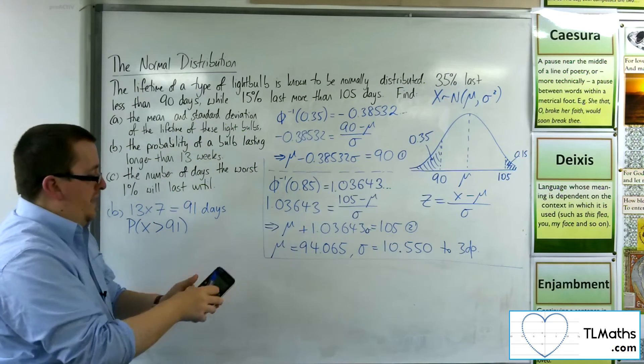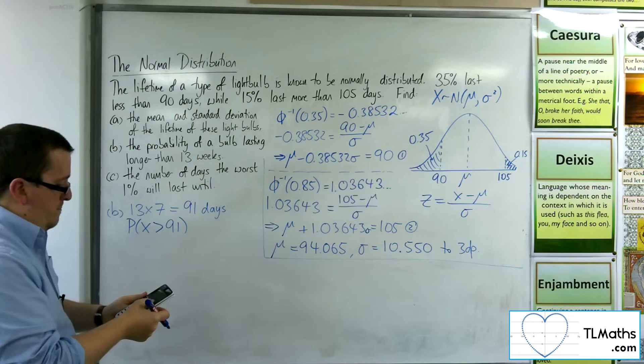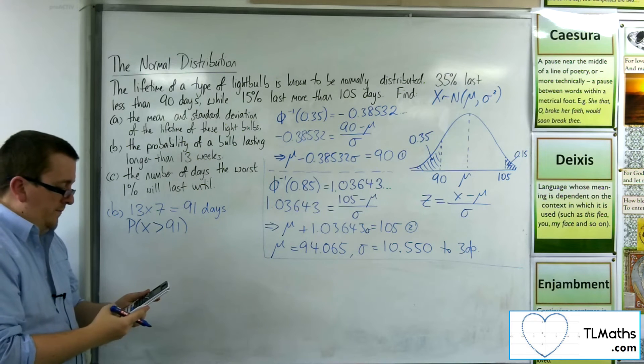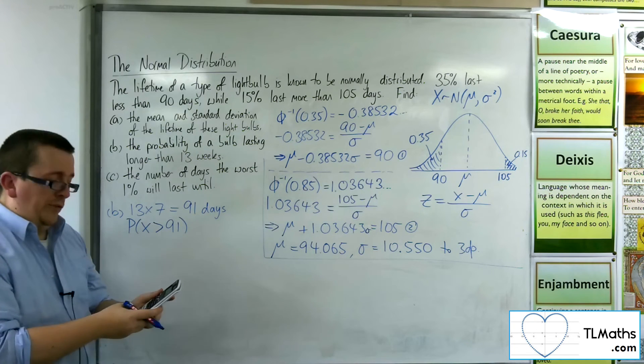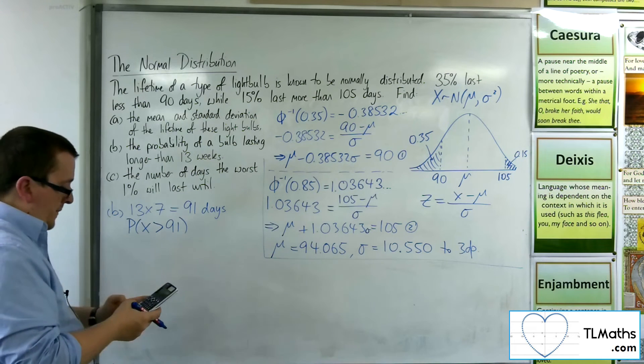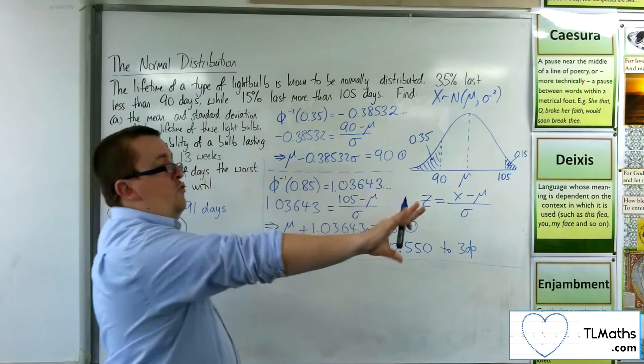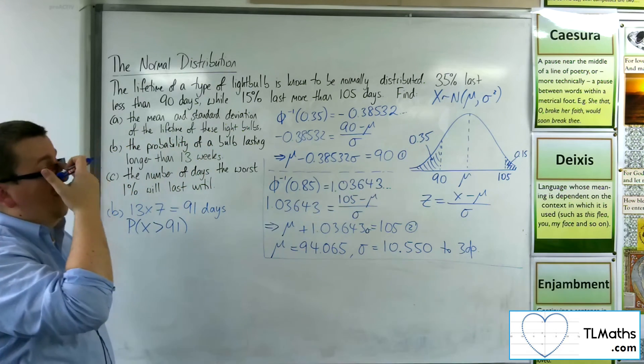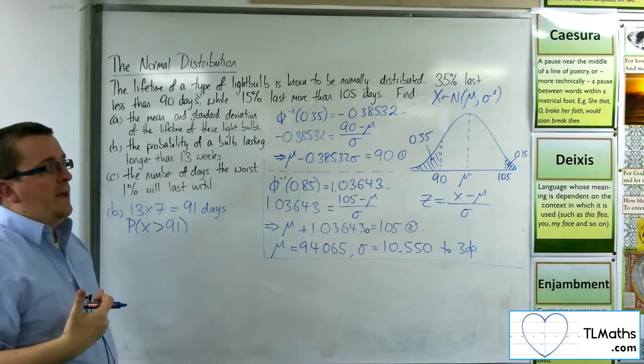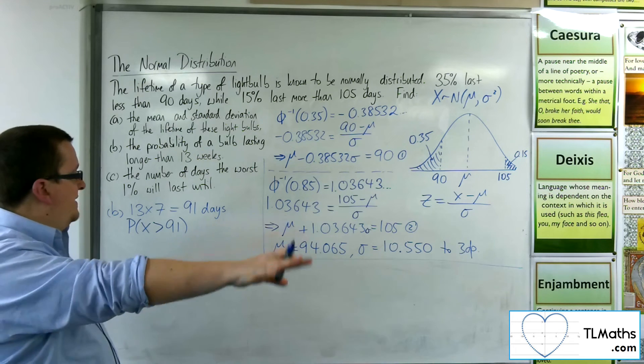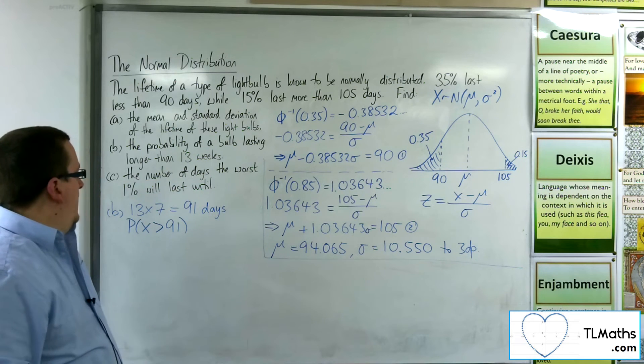So on my calculator, I can go to menu, then number 7. And then I want normal CD. The lower will be the 91. The upper is far enough away so that I don't have to worry about it being too close. So 10 standard deviations. So let's say 100 away.